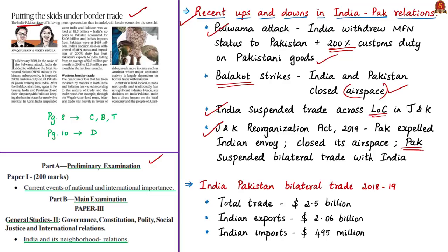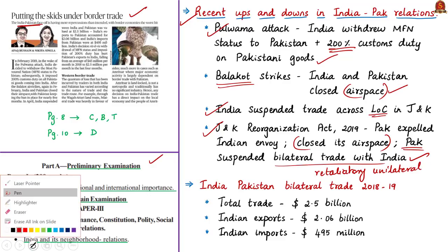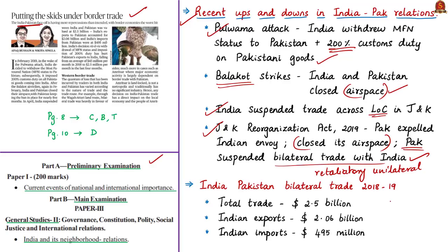Bilateral relations worsened further after the passage of the Jammu and Kashmir Reorganization Act of 2019, following which Pakistan partially shut down its airspace and suspended bilateral trade with India. These actions by both countries are retaliatory unilateral decisions, affecting trade without mutual agreement. In 2018–19, bilateral trade between India and Pakistan was valued at 2.5 billion dollars — India's exports to Pakistan were 2.06 billion dollars and imports from Pakistan were 495 million dollars.